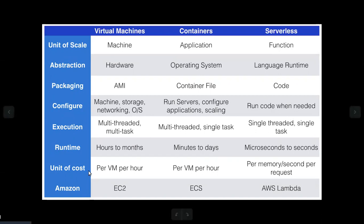For the unit of cost, you pay for the virtual machine per VM per hour. In the container with ECS, you pay per VM per host.